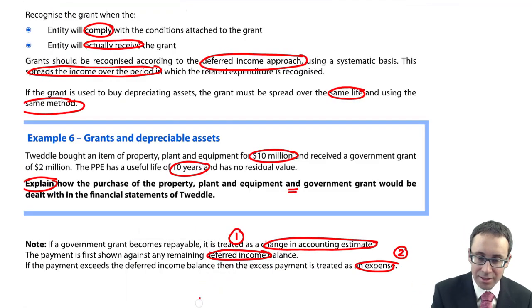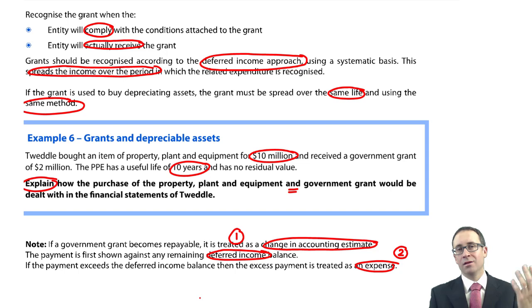It's not something you're likely to see a lot of, but it's there just in case as one of those small picky little bits in the standard that potentially the examiner can throw at you. But that's it in terms of government grants. It's not a huge area of the syllabus, but it is still relevant and it is still examinable. So neglect it at your peril.